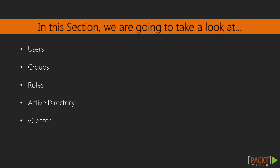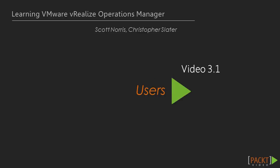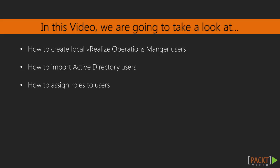We'll be covering certain use cases, such as how to create a user or group from scratch, and how to give them just the information they need to do their role within a certain organization. In this video, we're going to take a specific look at how users play a role in vRealize Operations Manager. We'll cover how to create local vRealize Operations Manager users, import Active Directory users from an external directory source, and how to assign roles and permissions — covering use cases such as a security user, an administrator, or an executive who may only want access to certain dashboards.